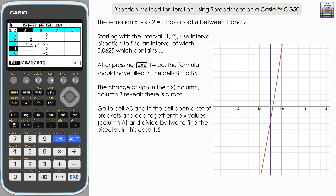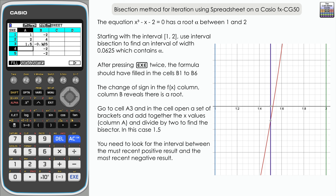Looking at the graph you can see the bisector line at 1.5 down the middle, and the curve is actually in the interval between 1.5 and 2. From the calculator: 1.5 has produced a negative value of negative 0.125, and 2 is the most recent positive value of 4. So 1.5 is a little below where the root is and 2 is above. The root lies in that interval, so we go forward with 1.5 and 2.